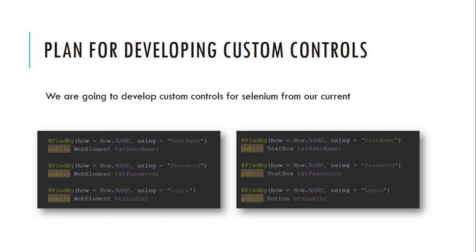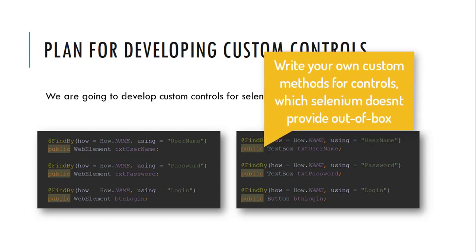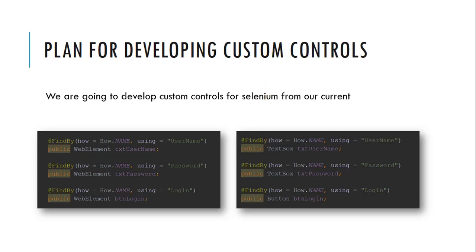This doesn't mean the existing code we wrote is useless — it is still helpful. But with custom controls, you can implement your own methods. For example, for a TextBox you could add a sendKeys-with-clear method or sendKeys with special operations. For a Button, you could add doubleClick or hover — methods very specific to those particular controls — making it clear to everyone on your team how each control is differentiated from the standard WebElement.